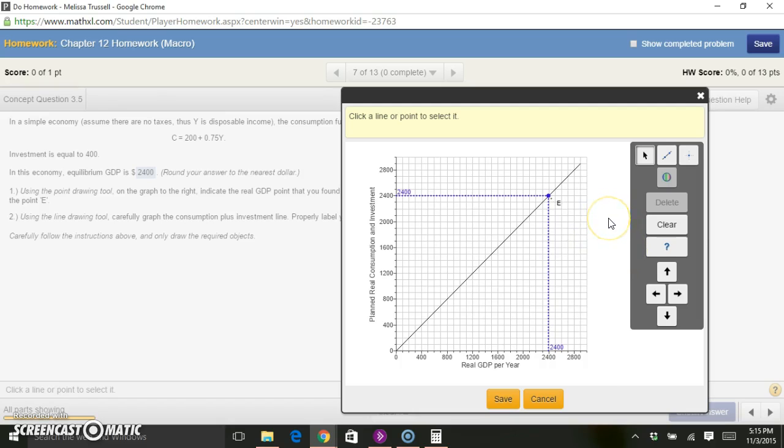Next, it wants us to use the line drawing tool to graph the consumption plus investment line. To draw a line, we just need two points. We already know one point is going to be at the equilibrium, because the equilibrium is wherever my consumption plus investment line crosses my GDP line. That's going to be one point on that line. To find another point, I'm just going to look at what consumption plus investment is when GDP equals 0.